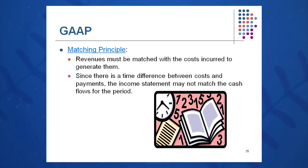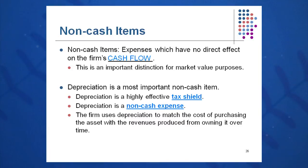Another generally accepted accounting principle is the matching principle — we try to match our sales with our costs, our revenues with our expenses. One popular item to do this is depreciation. We know that some equipment lasts for a long time, so we try to match portions of the cost of that equipment with the sales that it generates. Depreciation is a non-cash item — there are no dollars blowing out the window as you drive down the street in your company's Ford Explorer.